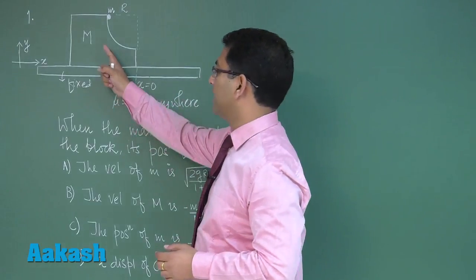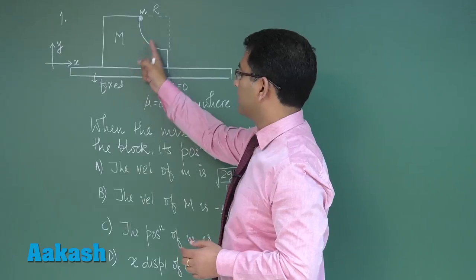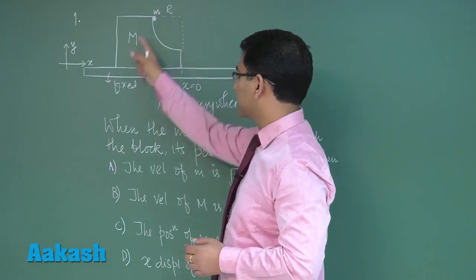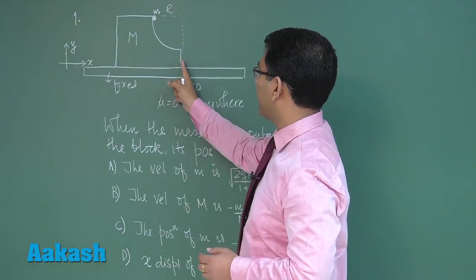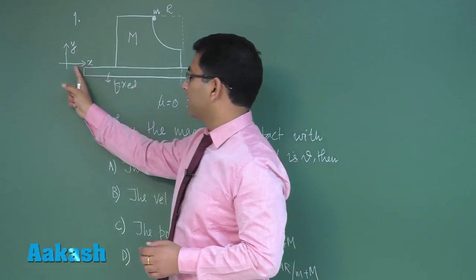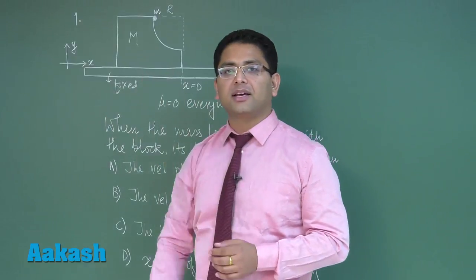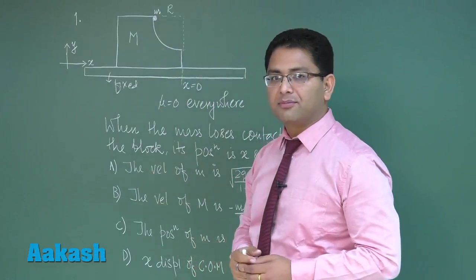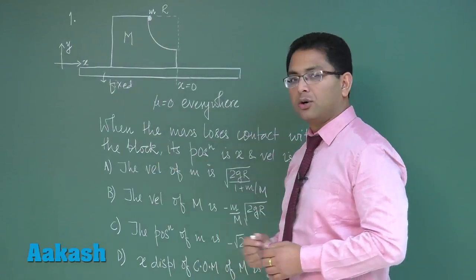There is a block of mass capital M and there is another small particle of mass small m. This is kept on a table which is rigidly fixed. All the surfaces are smooth given mu equals to 0 and of course the initial coordinate the right edge of the block is x equals to 0. The coordinate frame x y is defined in this manner and this coordinate frame is rigidly fixed to the table. Now this small block is released from rest. This is the circular segment of radius r and the question goes as follows.